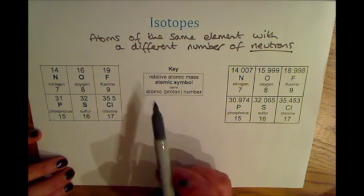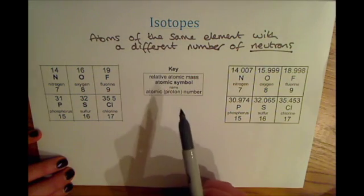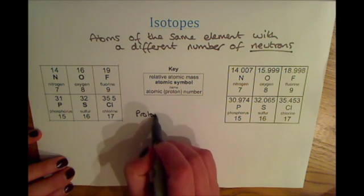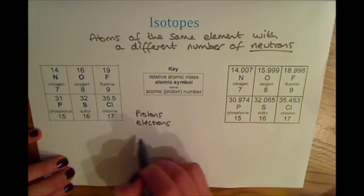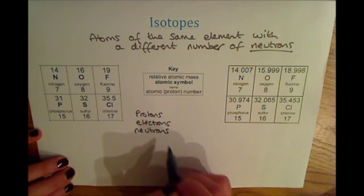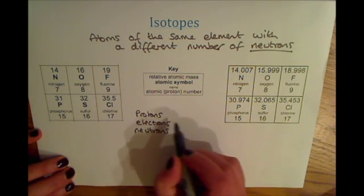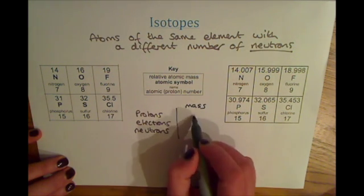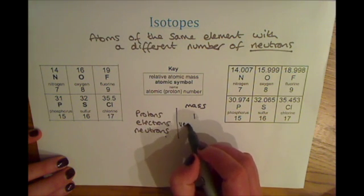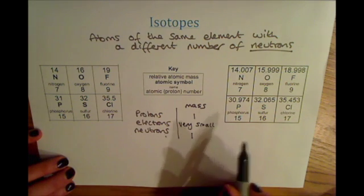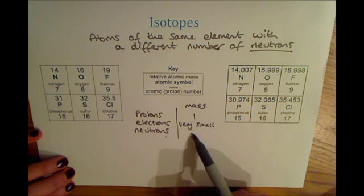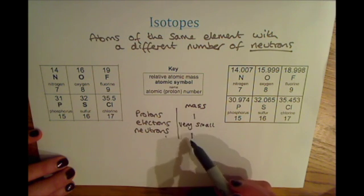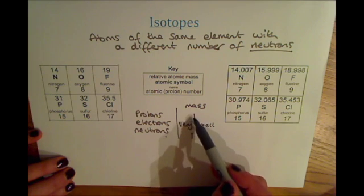At this point I just want to recap the subatomic particles in an atom so that we can understand how the number of neutrons changes the mass. In an atom you've got protons, electrons, and neutrons. The particles with mass are the protons and the neutrons. For electrons, we write their mass as very small because it's almost insignificant. We give protons and neutrons a relative mass of one because, relative to each other, they have the same mass.